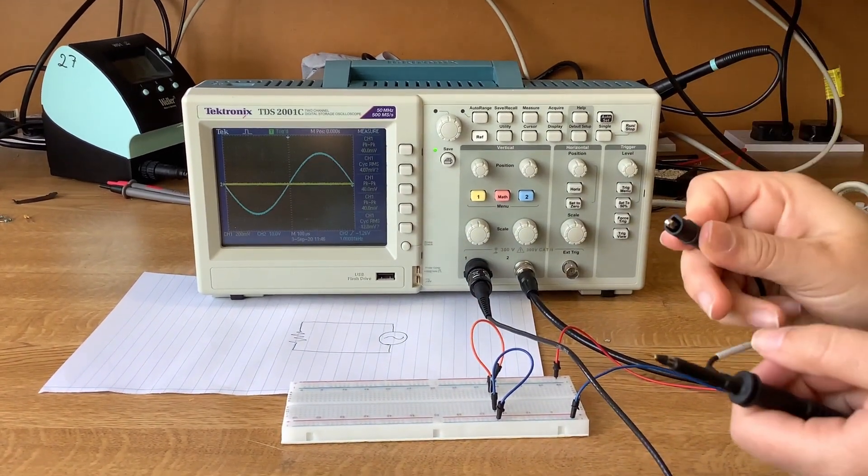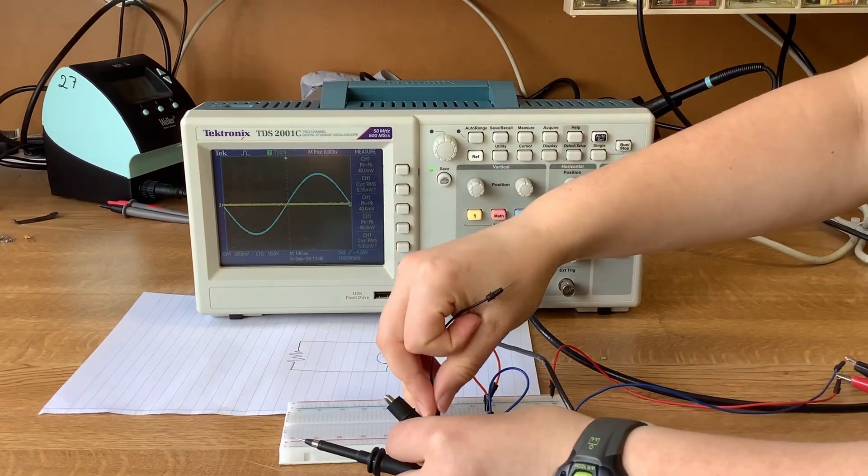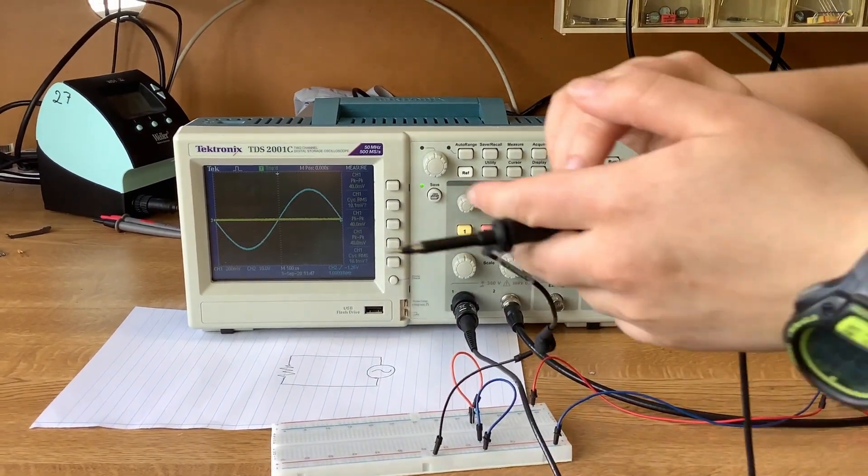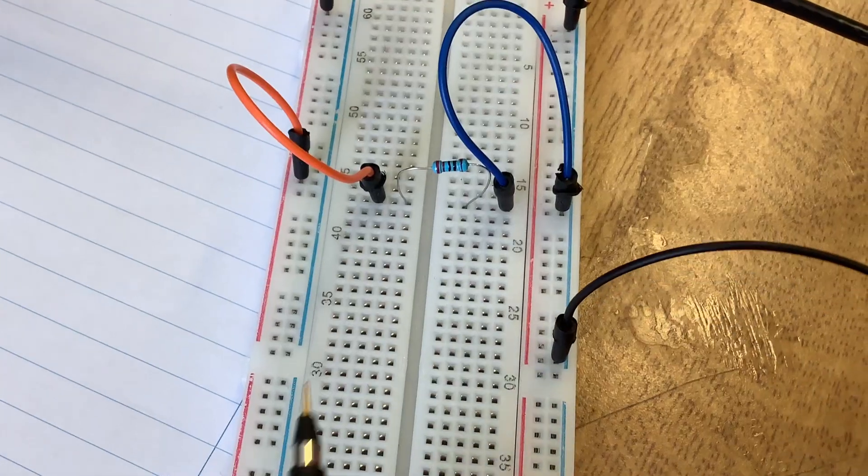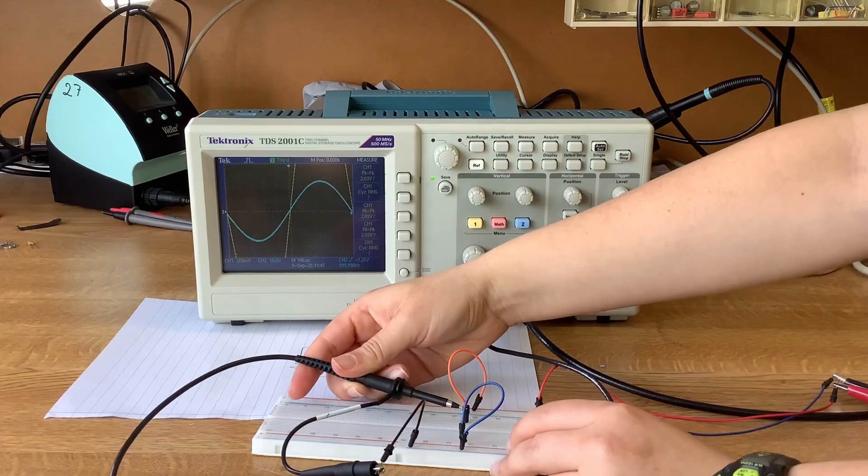This crocodile clip is going into ground, so I'm going to take this jumper as ground here. And now you use the tip for measuring the voltage. You just need to indicate where to measure it.